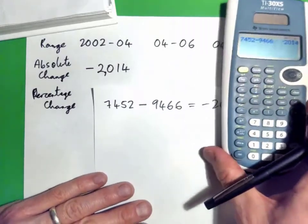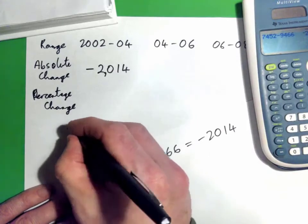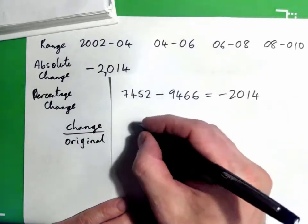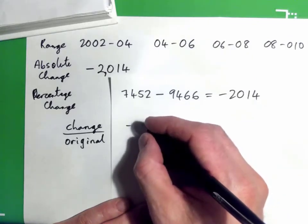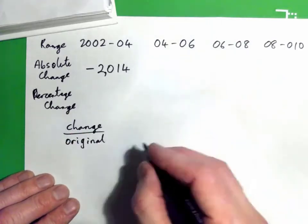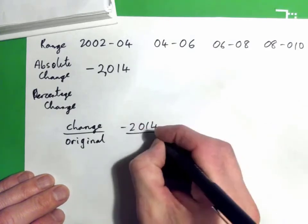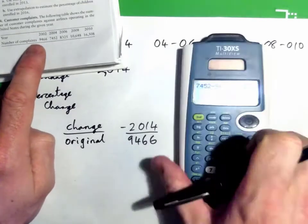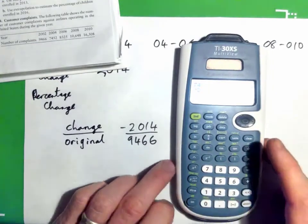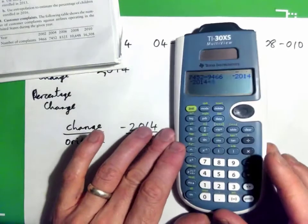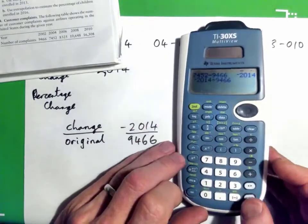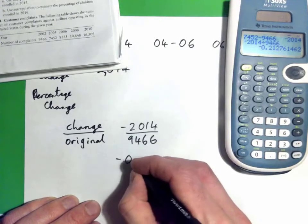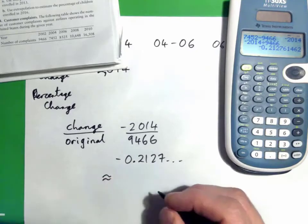Now what's the percentage change? Percentage change is always the change over the original. The change was negative 2,014 and the original amount in 2002 was 9,466. So negative 2,014 divided by 9,466 gives negative 0.2127. To convert to percent, move the decimal point over two spots — that's 21.27%, which rounded to the nearest whole number percent is negative 21 percent.